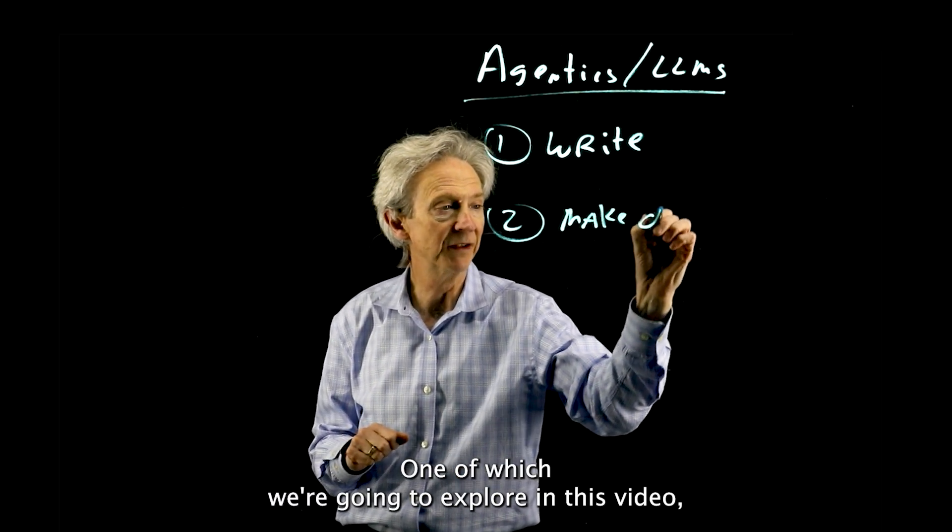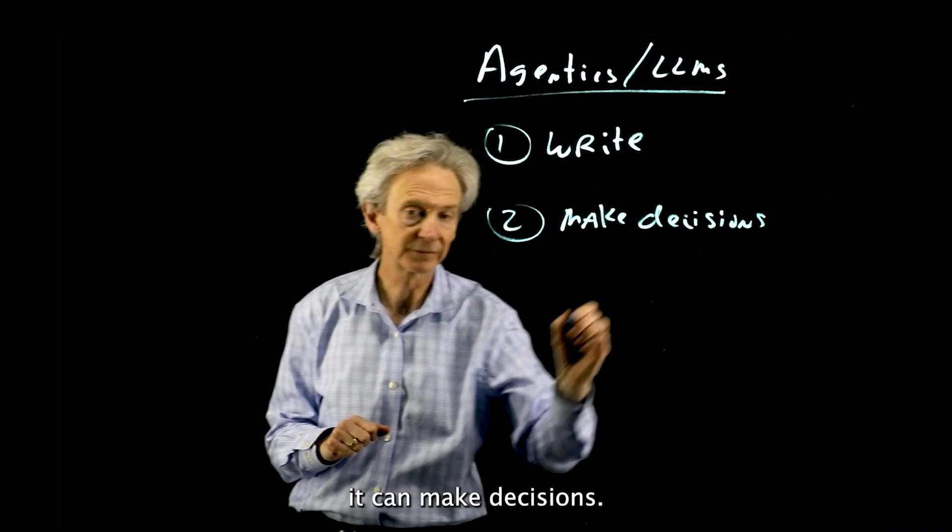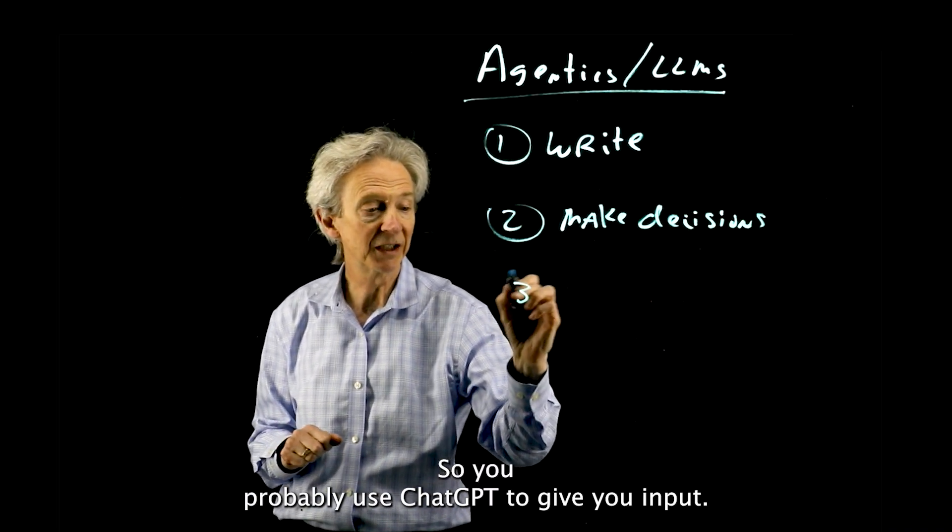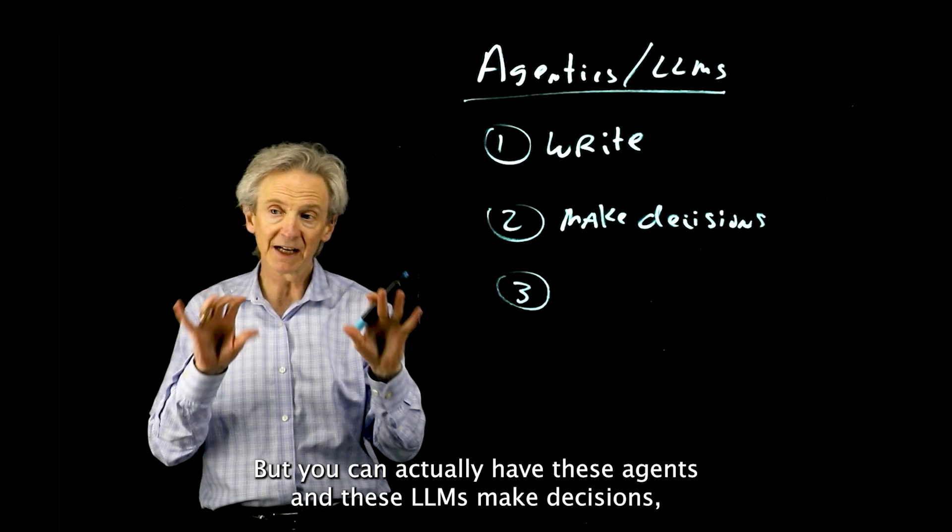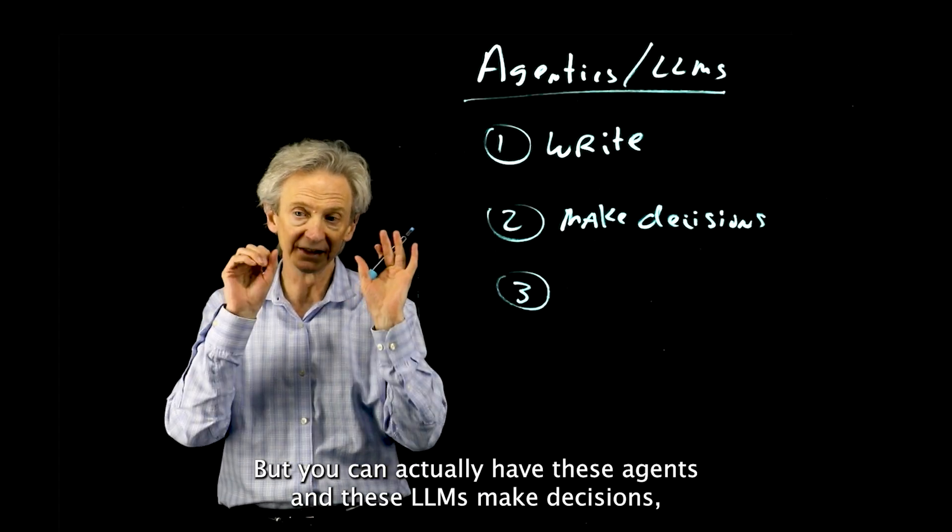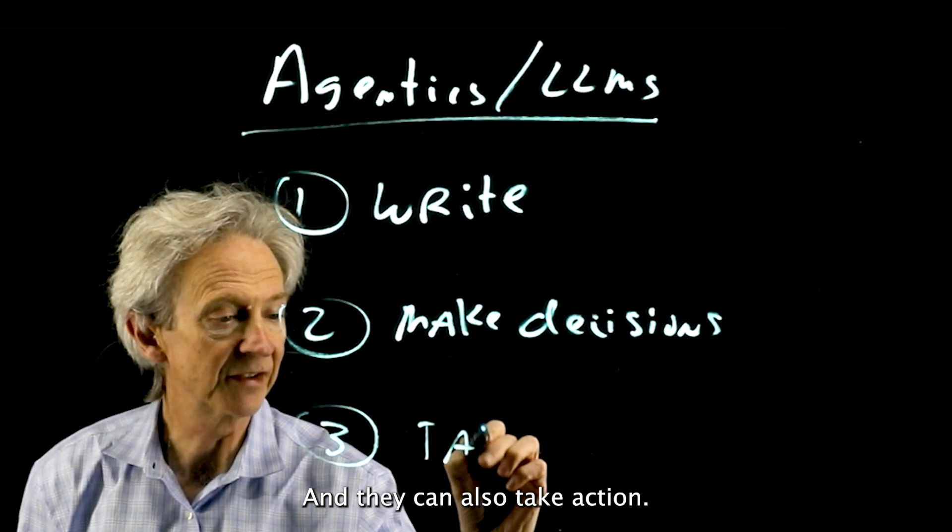But there's a couple of things that it can do. One of which we're going to explore in this video. It can make decisions. You've probably used ChatGPT to give you input and you made the decision, but you can actually have these agents and LLMs make decisions, specific decisions.